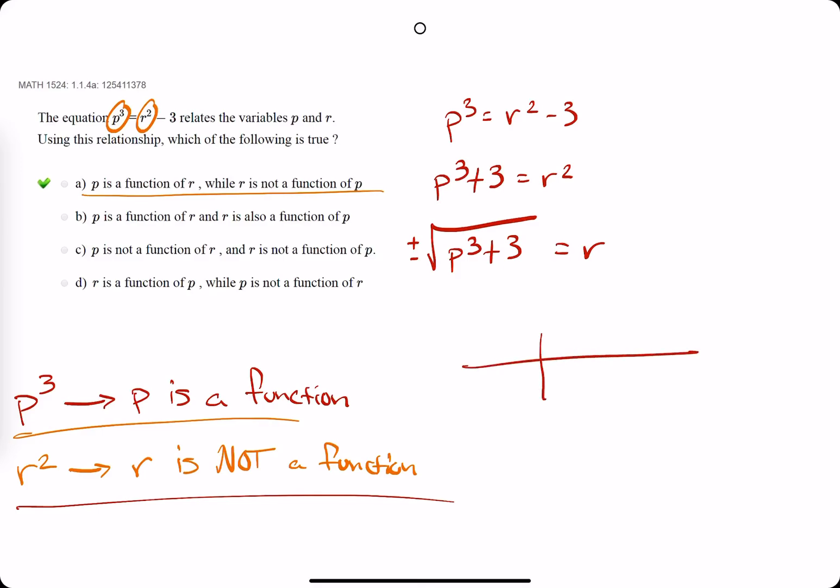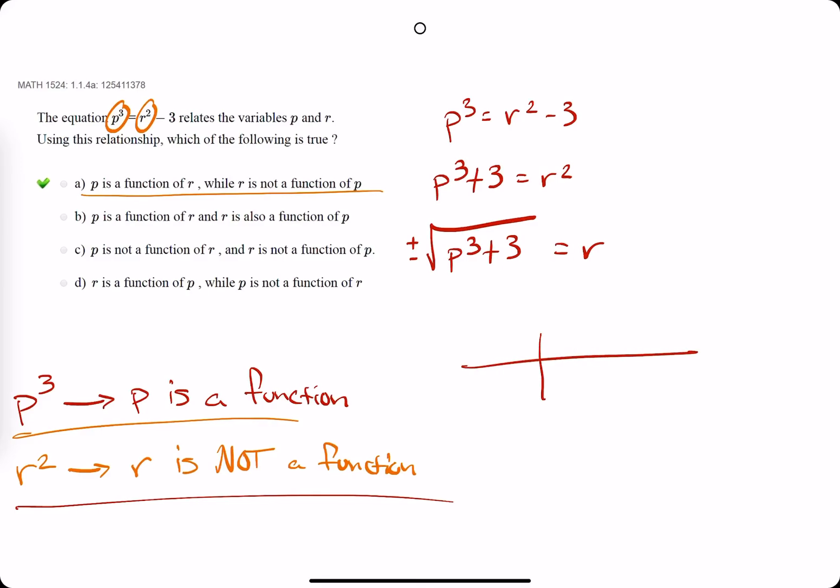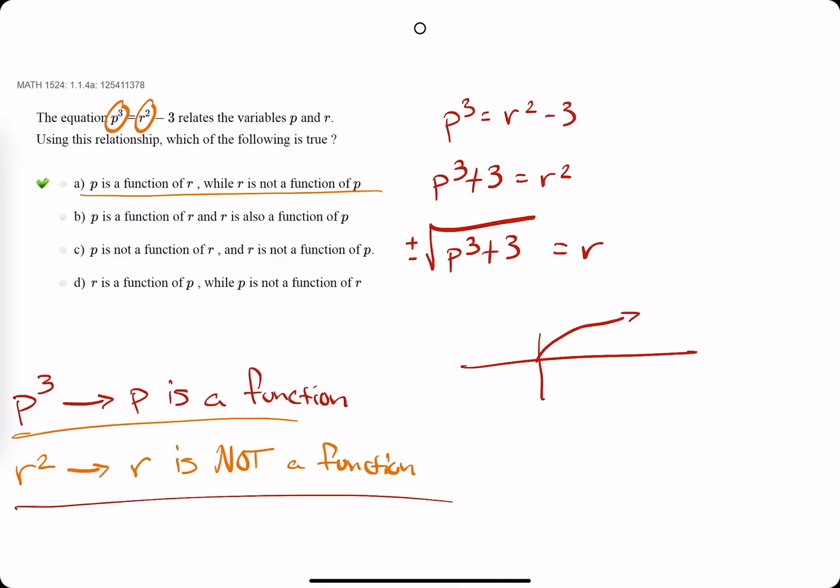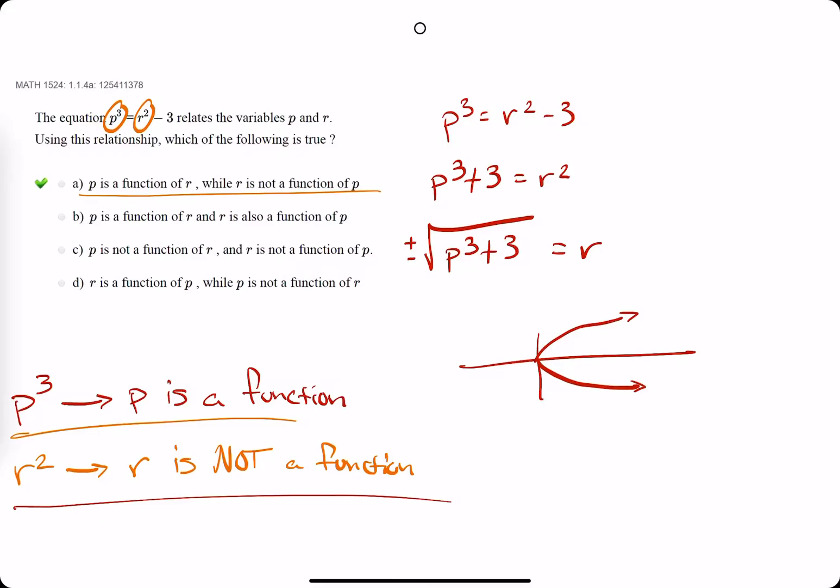a positive square root function would look something like this. But then a negative square root function would look something like this. It would be mirrored, right? So not a function,